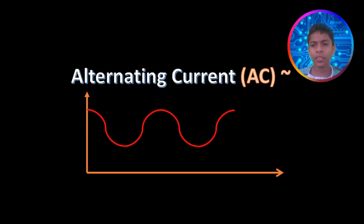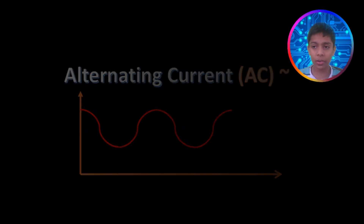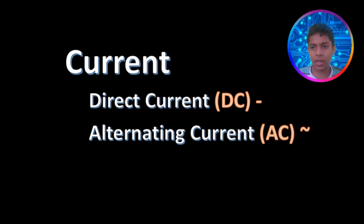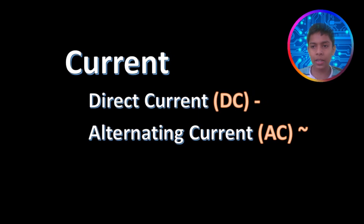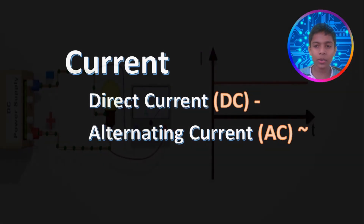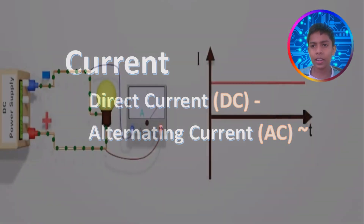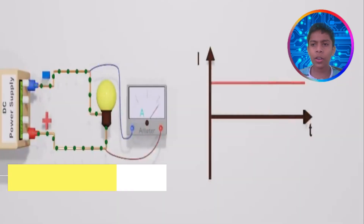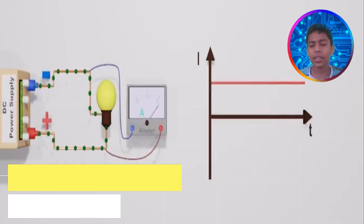The first one is direct current and the second one is alternating current. The first part is direct current and the second part is alternating current. First we are going to talk about the direct current.